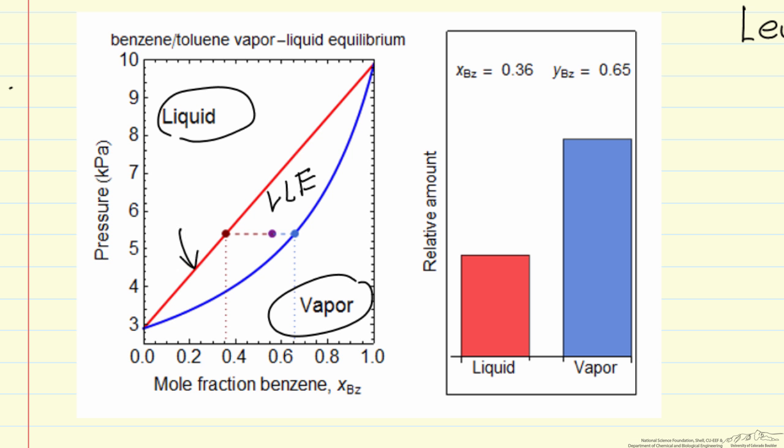The red line, which is a straight line in Raoult's Law, corresponds to the bubble point, and the blue line corresponds to the dew point. On the right, we are showing the relative amounts of liquid and vapor.